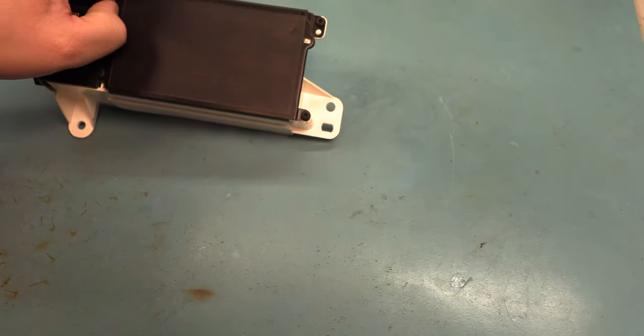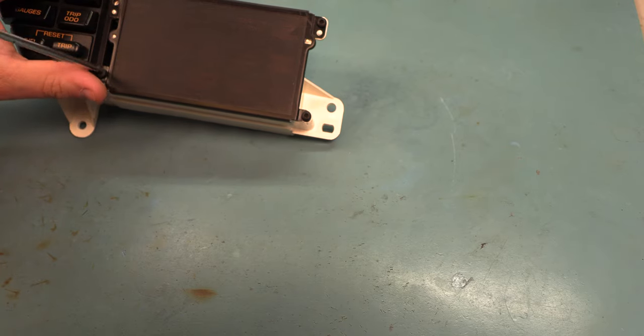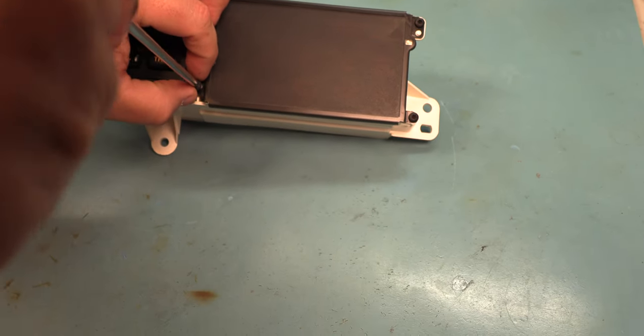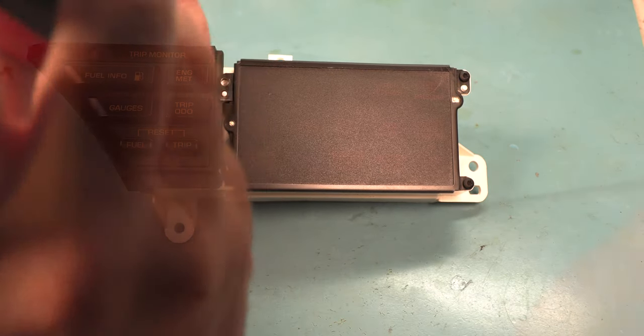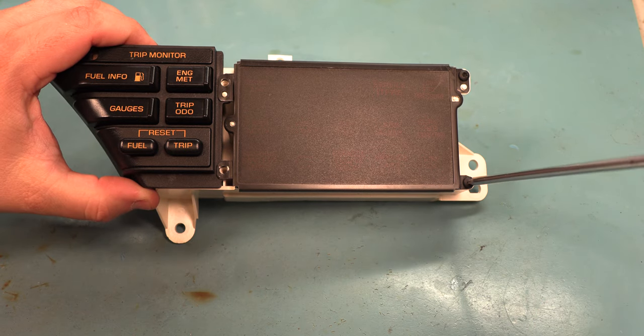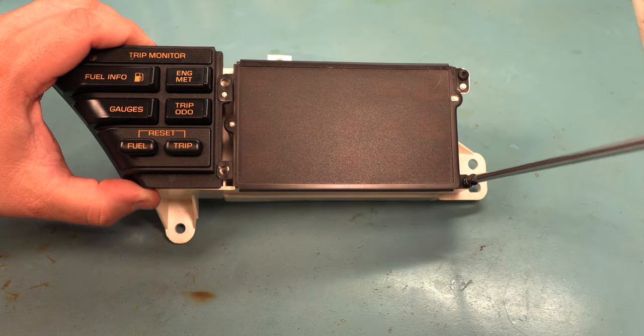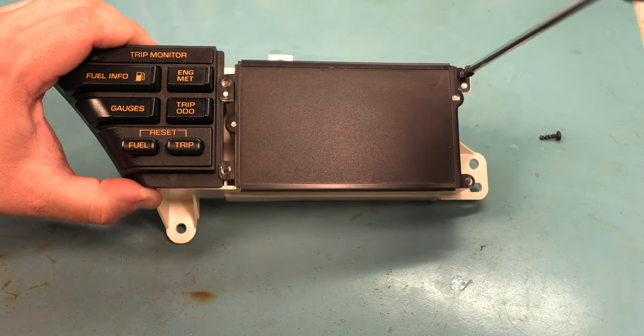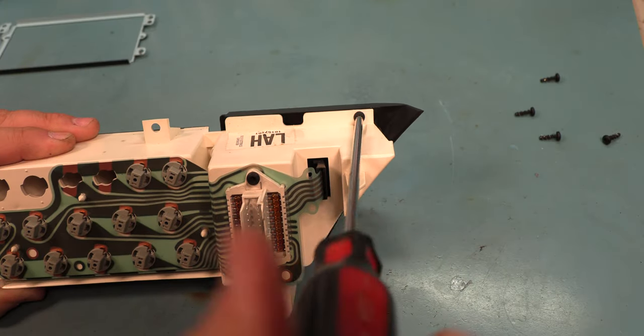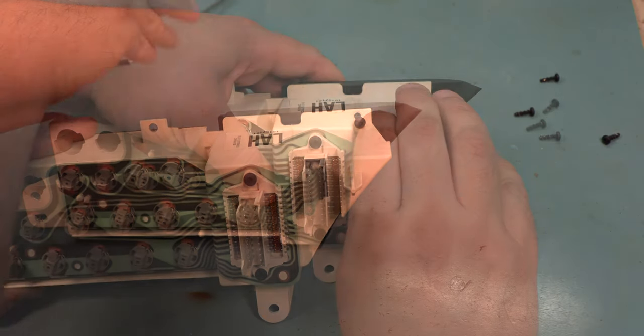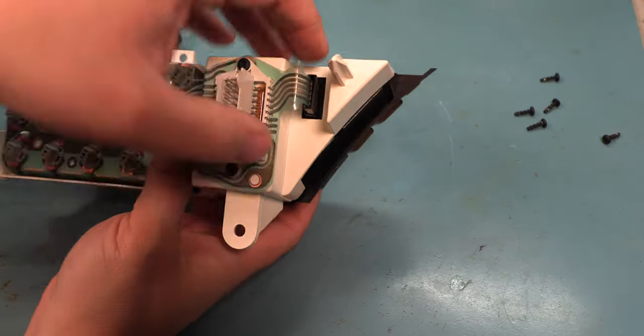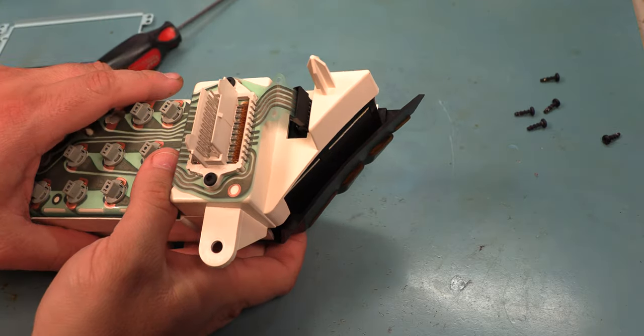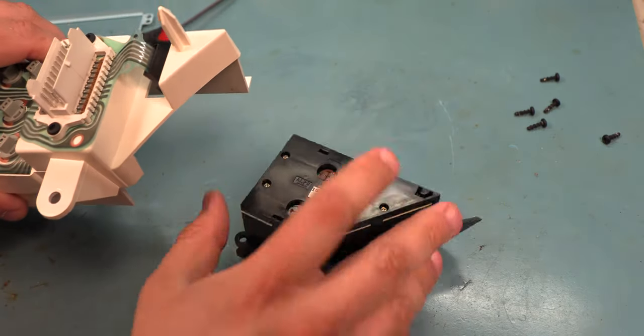We're going to take a Torx 15 screwdriver and remove the four screws on the front. We'll remove the Torx 15 screw on the back. Next we'll gently disconnect the electrical connector on the back side of the board by pulling up, and the switch panel will drop free.